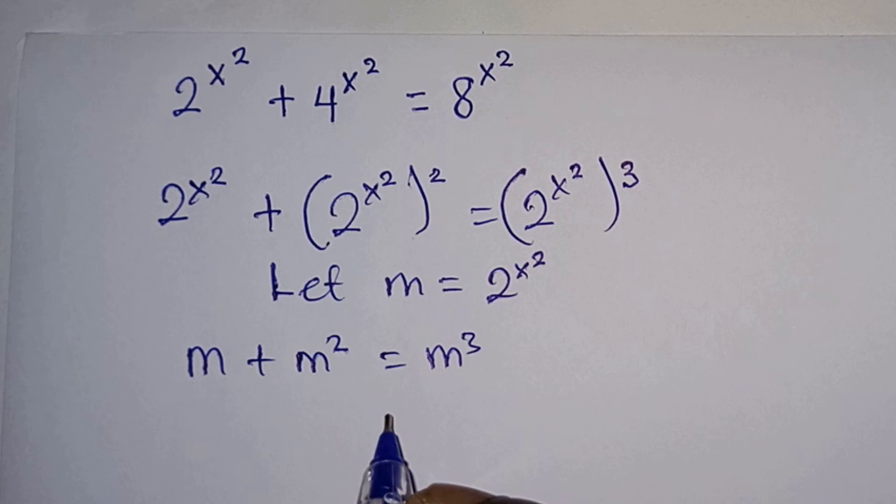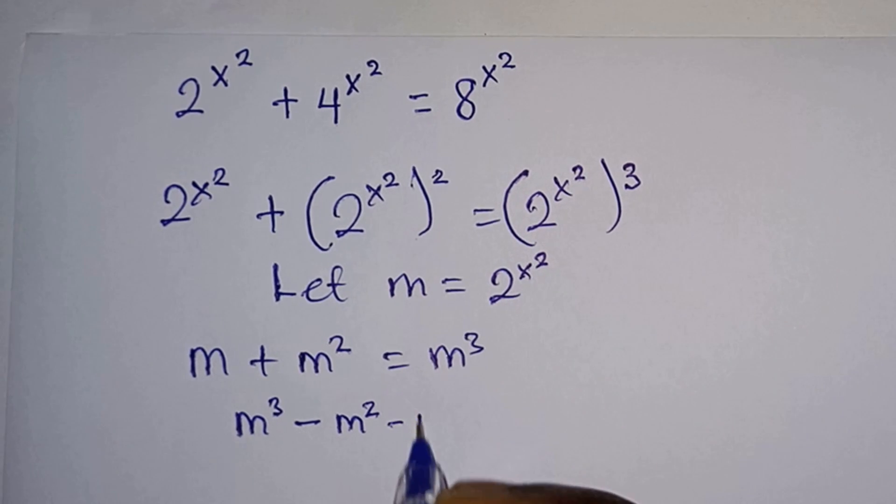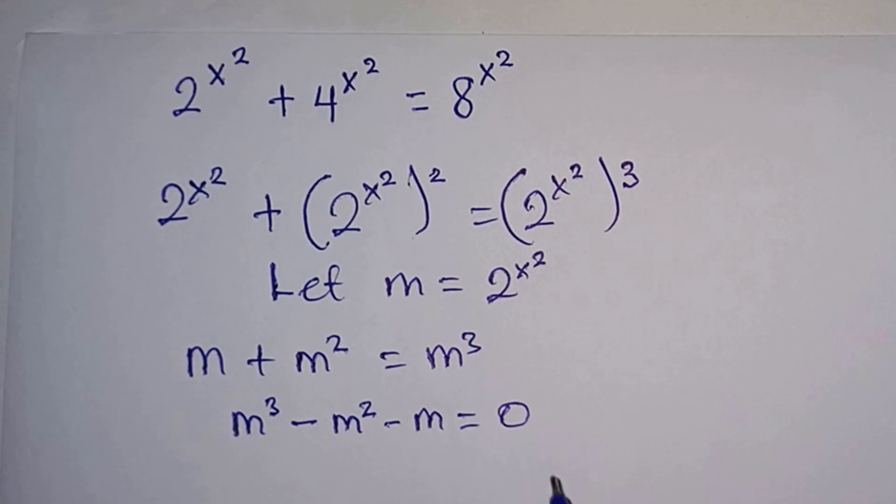Then from here we will equate everything to 0, so we will have m³ - m² - m = 0.